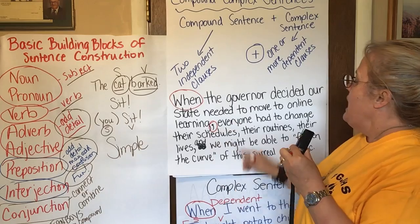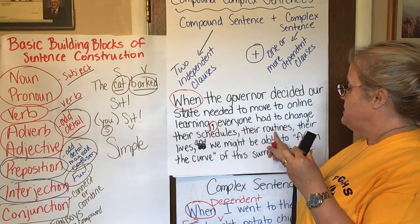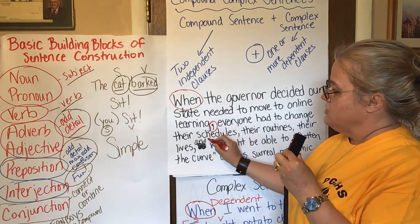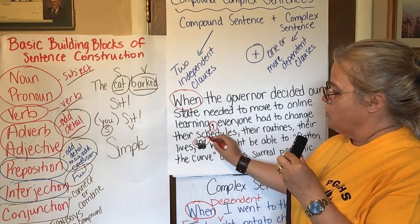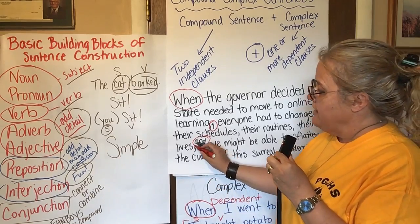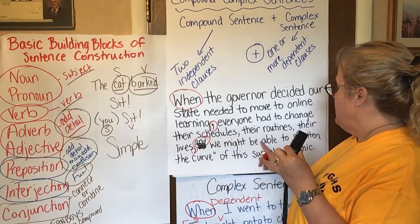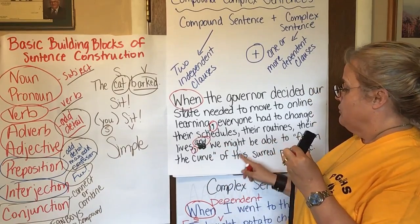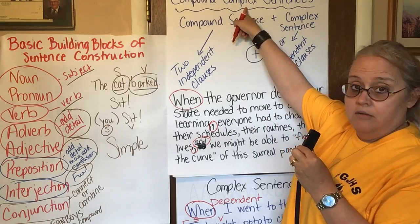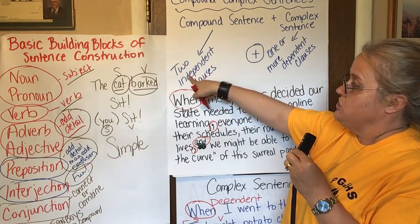'Everyone had to change their schedules, their routines, their lives' — and oh, here's another one of those words. That's a FANBOYS word — 'and' — and there's a comma in front of it. 'We might be able to flatten the curve of this surreal pandemic.' So to make this compound-complex, I have to know that I have two independent clauses and one or more dependent clauses.